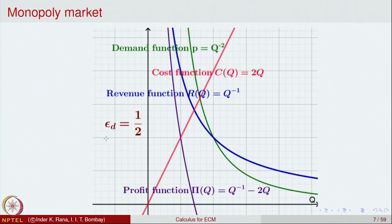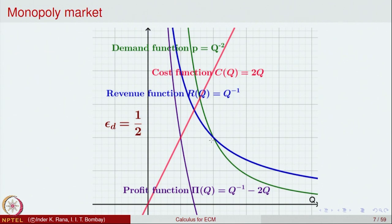For this model the coefficient of elasticity is 1/2, which is less than 1. Looking at the graph, the green demand function and the blue revenue function intersect at a point where the quantity produced gives a price equal to the revenue. There are various other interpretations one can make depending on what you are looking at.